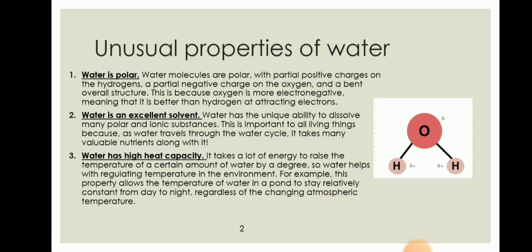Water has a high heat capacity. It takes a lot of energy to raise the temperature of a certain amount of water by a degree. So water helps with regulating temperature in the environment. For example, this property allows the temperature of water in a pond to stay relatively constant from day to night, regardless of the changing atmospheric temperature.